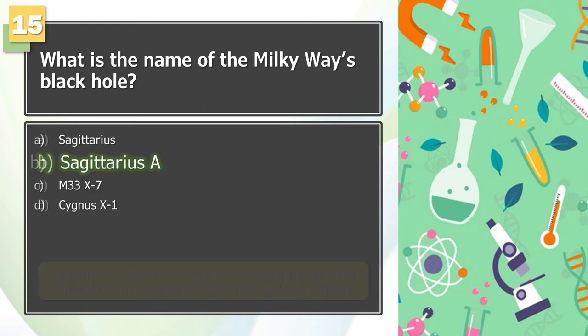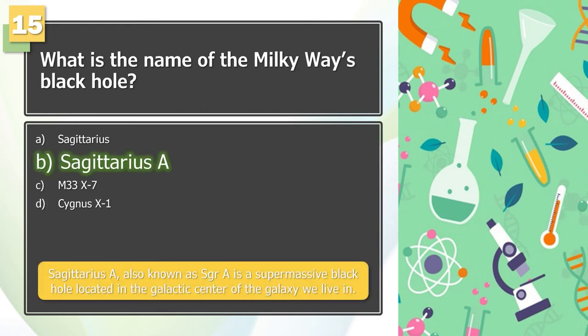The answer is B. Sagittarius A, also known as SGR A, is a supermassive black hole located in the galactic center of the galaxy we live in.